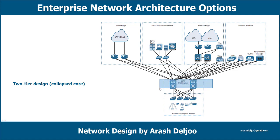As you can see, we have two distribution/core layer switches for redundancy, and also multiple links between the core distribution layer switches to the WAN edge router and other devices. This gives us redundancy for fault tolerance and load sharing. This is the first type of design — we call it the two-tier design.